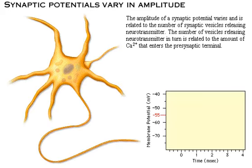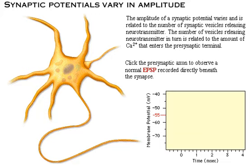The amplitude of a synaptic potential varies and is related to the number of synaptic vesicles releasing neurotransmitter. The number of vesicles releasing neurotransmitter in turn is related to the amount of calcium that enters the presynaptic terminal. Click the presynaptic axon to observe a normal EPSP recorded directly beneath the synapse.